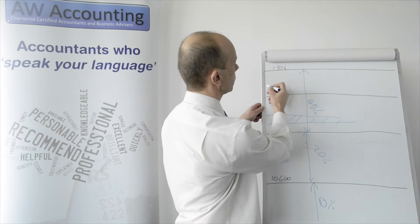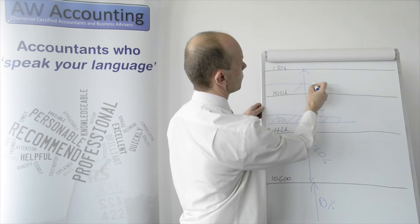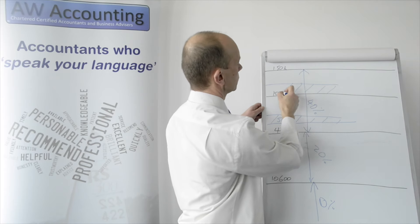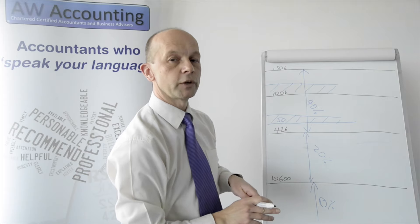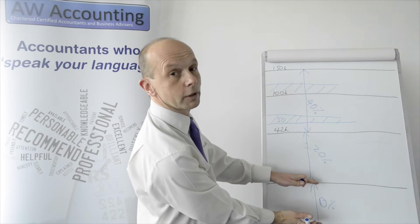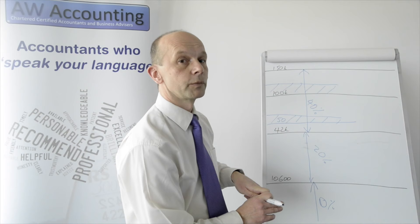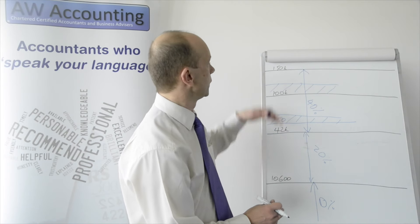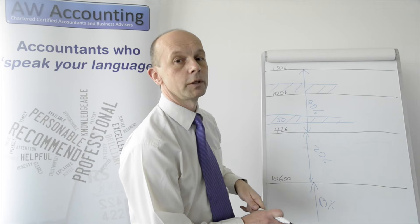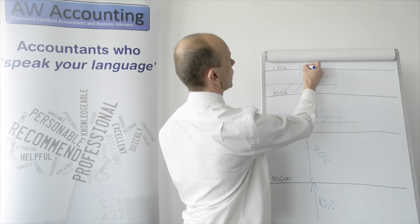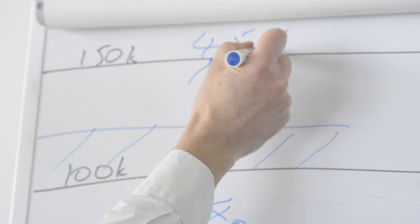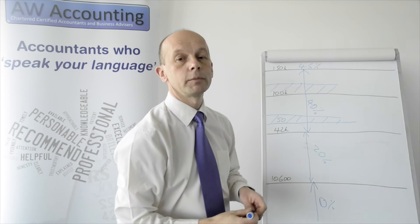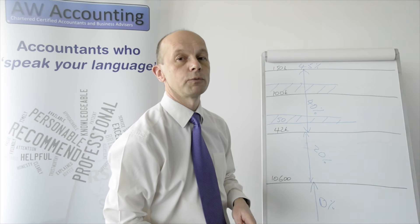So between £100,000 and £120,000 you lose your tax-free allowance. This £10,600 tax-free allowance that you were given gets taken away as soon as you get to £100,000, between £100,000 and £120,000. And last but not least, at £150,000 you reach the higher rate of tax at 45% for high earners.